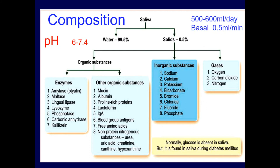Other organic materials include mucin, mucus, albumin, lactoferrin, and immunoglobulin IgA. Inorganic substances include sodium, calcium, potassium, and bicarbonate. Notably, glucose is normally absent in saliva, but is found in saliva during diabetes mellitus — the condition causes glucose to appear in significant amounts in saliva as well.